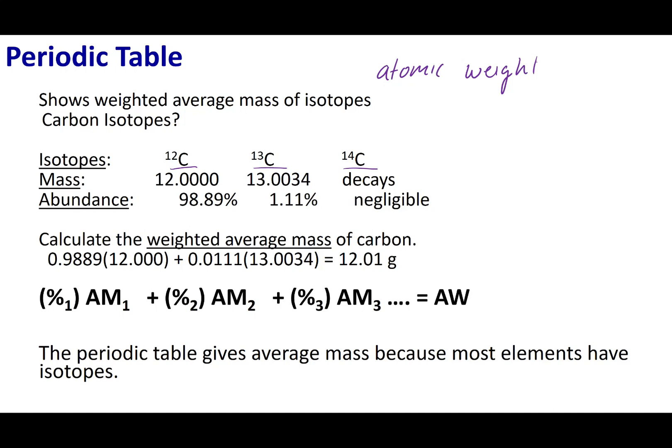But the only thing that differs is the number of neutrons. If I have something that differs in neutrons, we call that a different isotope. Carbon-12 is one isotope, carbon-13 is another isotope, and carbon-14 is the last isotope that I want to discuss here. What you'll note is that each one of these isotopes come in varying amounts, or their abundance can differ.